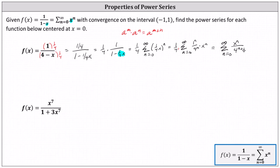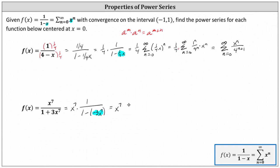For the second example, we have f of x equals x to the seventh divided by the quantity one plus three x to the seventh. We need the denominator to be a difference, not a sum, and we also need the numerator to be one. So we write the given function as x to the seventh times one divided by one minus negative three x to the seventh. Now we'll write a power series for one divided by the quantity one minus negative three x to the seventh by replacing x in the given power series with negative three x to the seventh. We'll also multiply the series by x to the seventh. This gives us x to the seventh times the sum from n equals zero to infinity of the nth power of negative three x to the seventh.